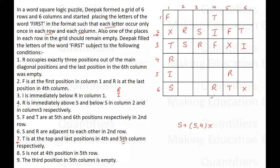In the fourth column, only S is left, and since S is not in the fifth row and fourth column, S goes in the earlier available row. For the fifth column, the letters I and S remain — S cannot go in the position already constrained, so S is placed and I fills the other. In the sixth column, the remaining letters are F, R, and S — F is already in column 1 first position so is placed accordingly, and R fills the remaining spot.